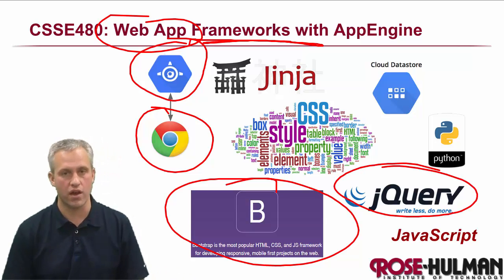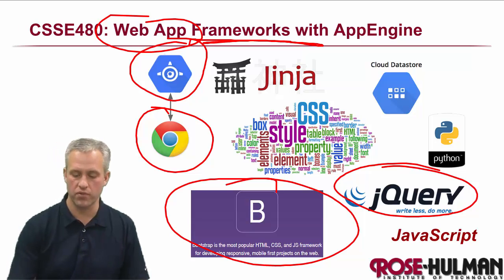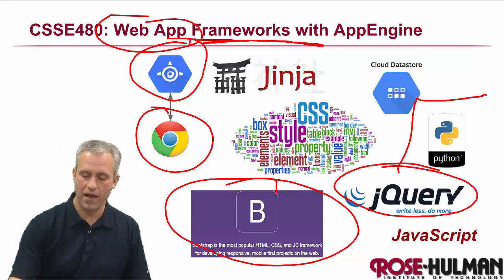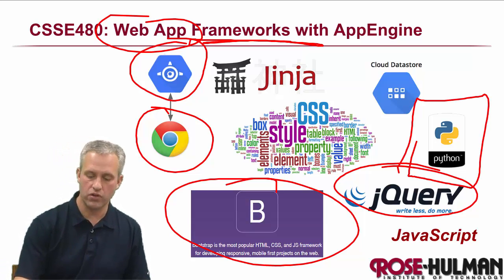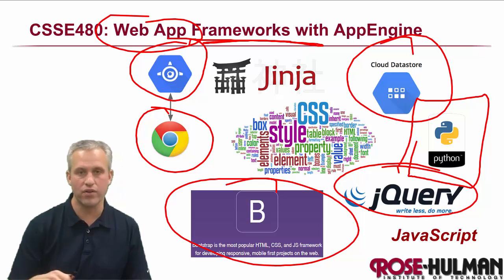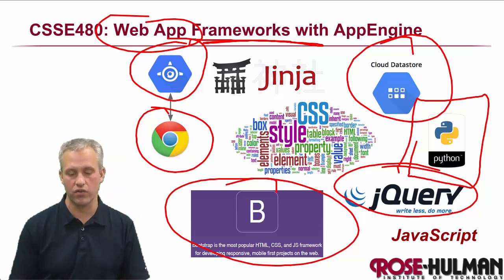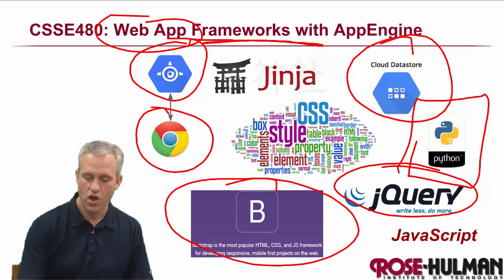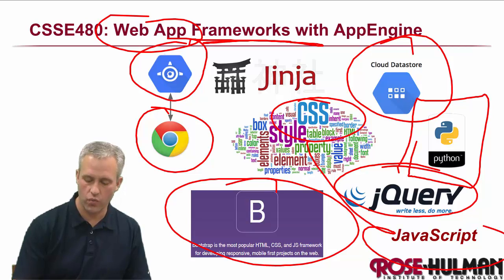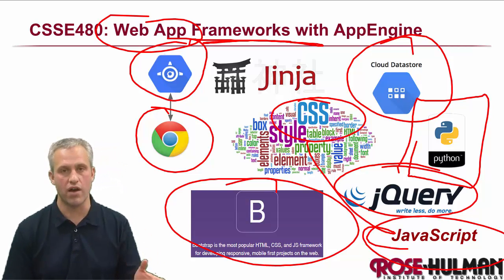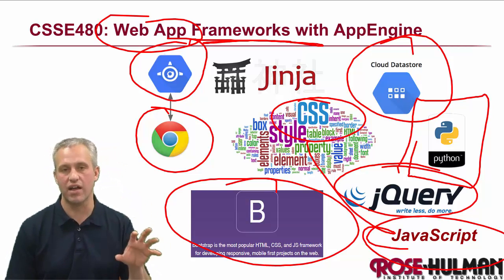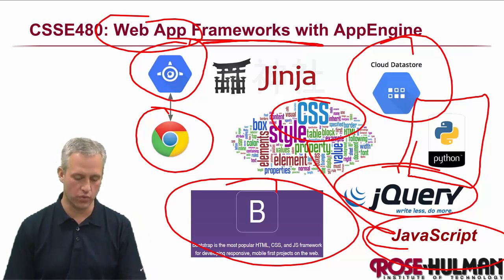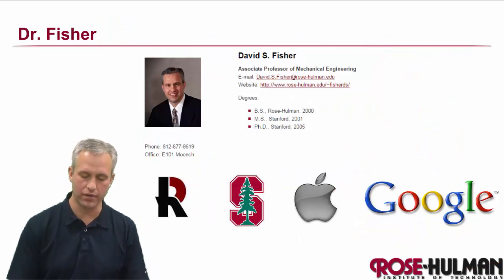framework for doing UI things. jQuery, of course, for doing a lot of our JavaScript. Our backends are going to be written in Python. We're going to be using the cloud data store to store all of our data on the back end. We're also going to be doing a ton with CSS and JavaScript. So that's the highest level of the key buzzwords we're going to be learning about.